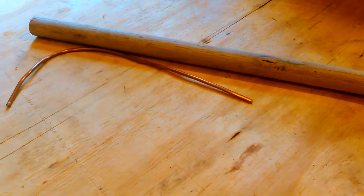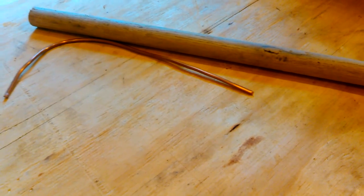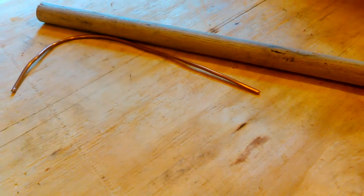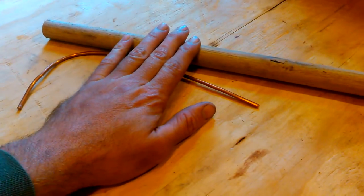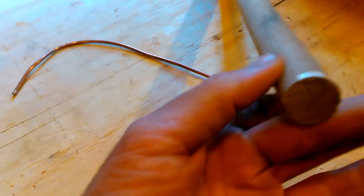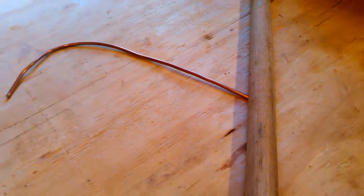This is probably one of the simplest tools you can make for pressure flaking when you're flint knapping. You start out with a dowel - this is a three-quarter inch, and this is actually oak.